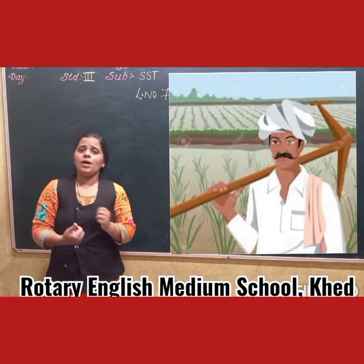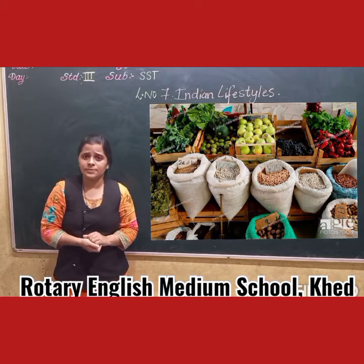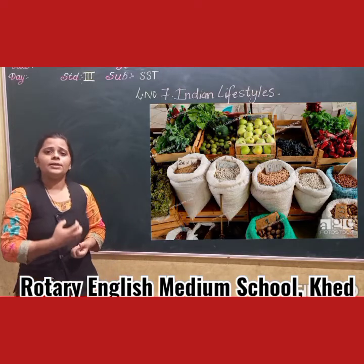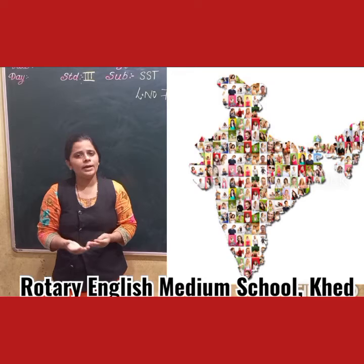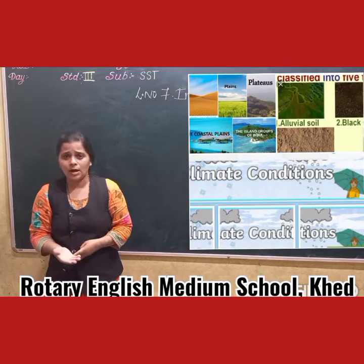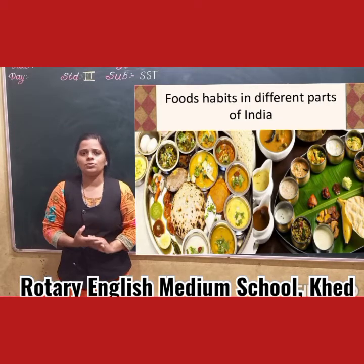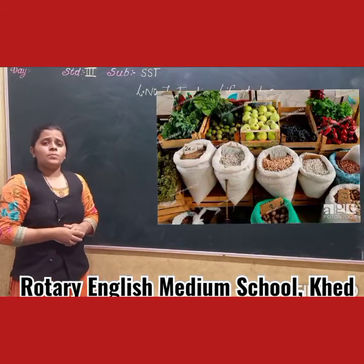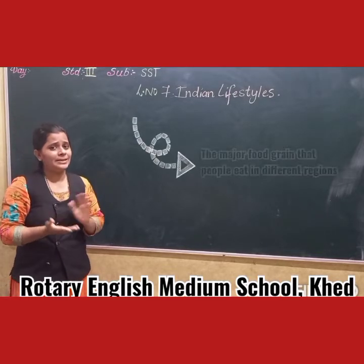People in different states have different types of food. The farmers of our country grow a variety of food crops such as pulses, vegetables, fruits, etc., according to the region they live in. According to the types of soil and climate conditions, the farmers grow their crops. Let's have a look at the major food that people eat in different regions.